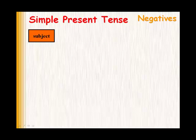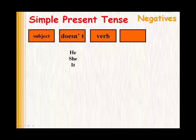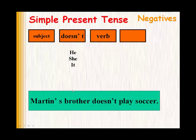With doesn't it's the same structure: subject, then doesn't, then the verb, then any other words. We use doesn't when the subject is he, she, or it, or any words that could be replaced with those. For example: Martin's brother doesn't play soccer — Martin's brother is the same as he.